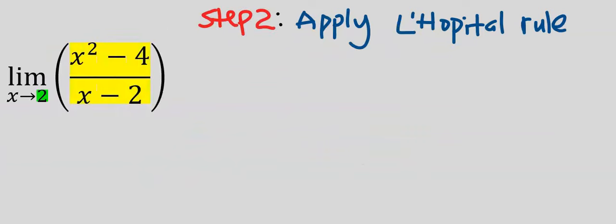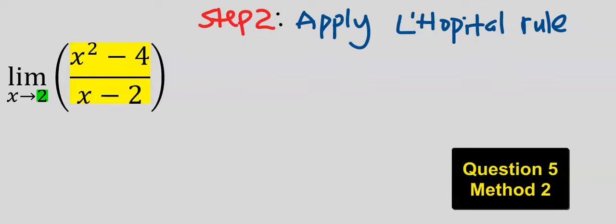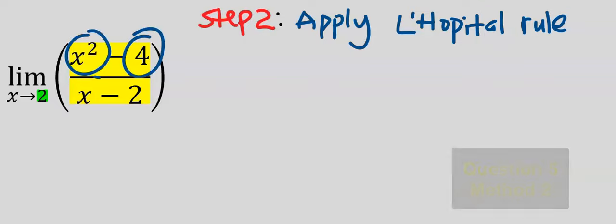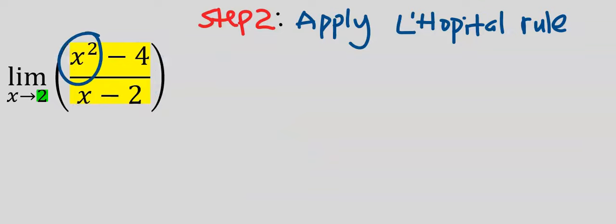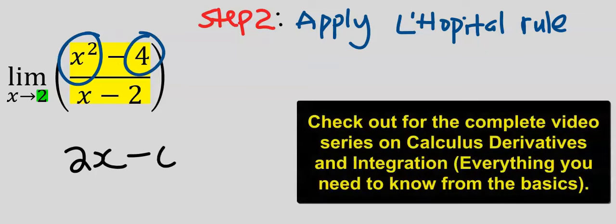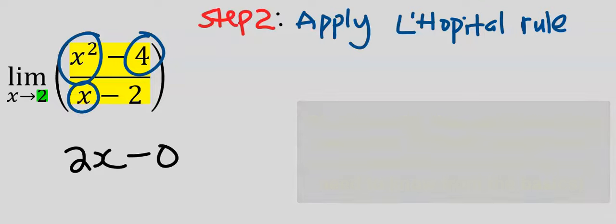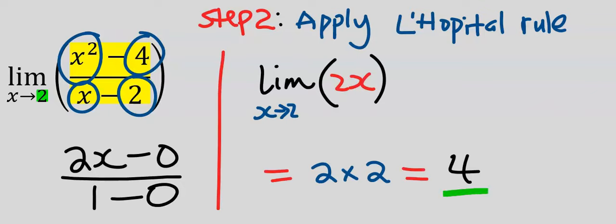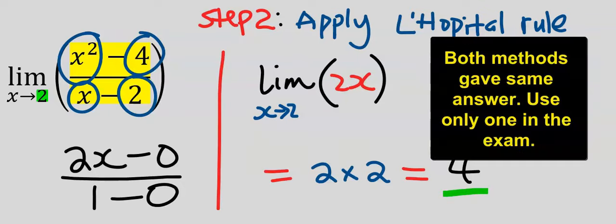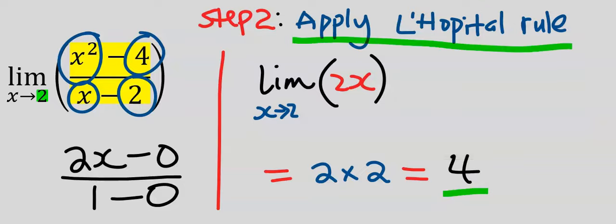We can also use differentiation as another method. We differentiate each variable independently, without using any derivative method — don't apply the quotient rule here. Differentiating x squared gives 2x; differentiating the constant 4 gives 0. Differentiating x gives 1; differentiating the constant 2 gives 0. Taking the limit, we get 4. Just one method is fine, and this is what L'Hôpital's rule is all about.